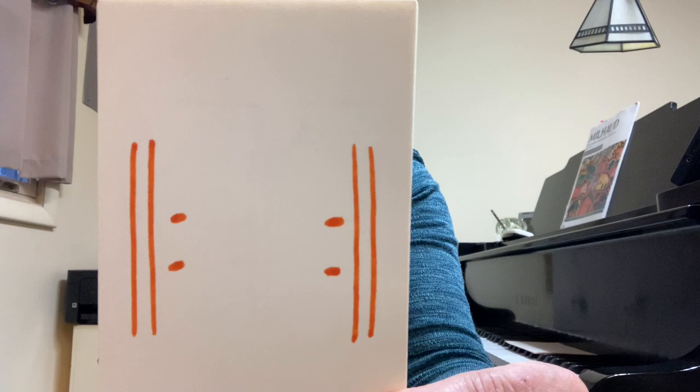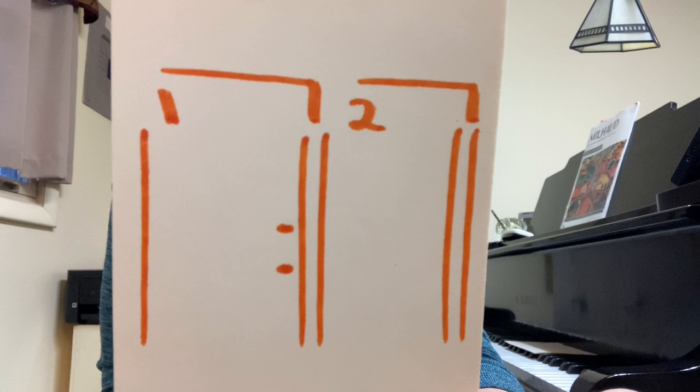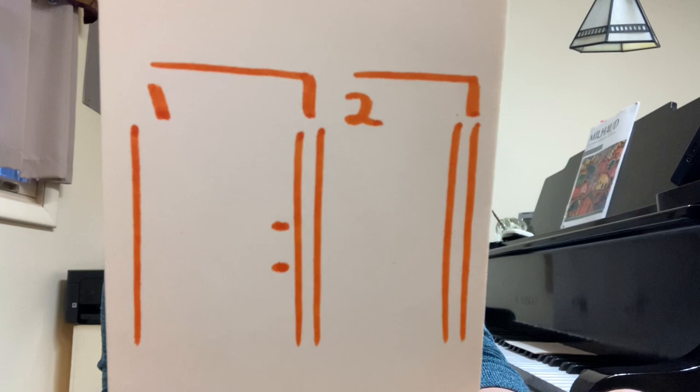These lines mean repeat whatever music is happening in between the lines with the dots. And this sign happens when you have a first and second ending in a piece. The first time through, you play the first ending and go back. Then the second time through, you play the second ending.